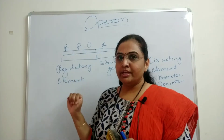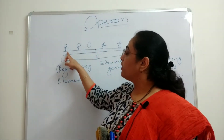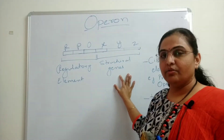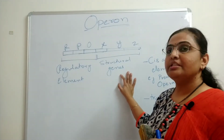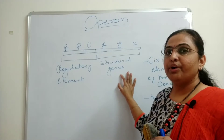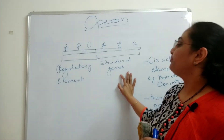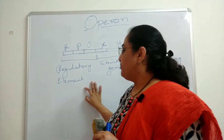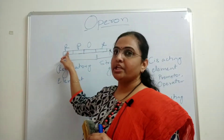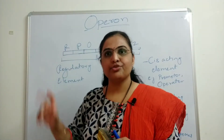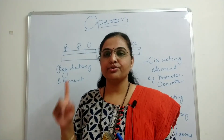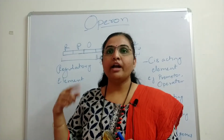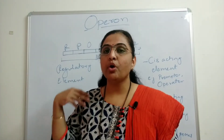The regulatory elements are of three types, as given by Jacob and Monod: the regulatory gene, the promoter, and the operator. The structural genes encode products — polypeptides or RNA. The regulatory gene is a type of structural gene whose product, a protein or RNA, is involved in the regulation of gene expression.